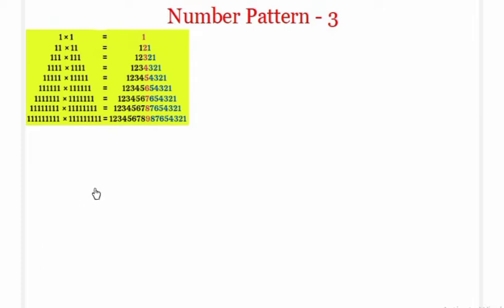The left hand side of this number pattern consists of only 1s, and all the terms in the left hand side are the product of two numbers. For example, if we consider the first row, it's the product of 1 and 1; second row it's 11 into 11; third row 111 into 111. As we move down, the number of 1s is increasing.